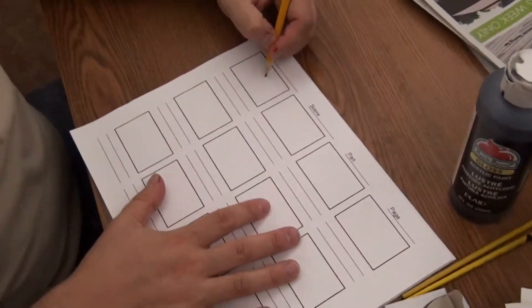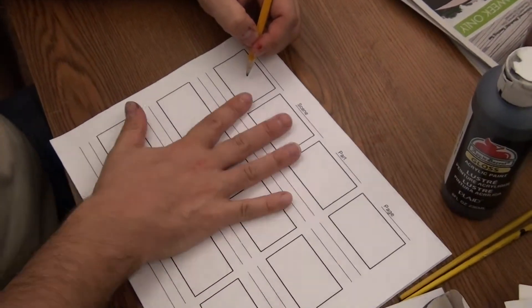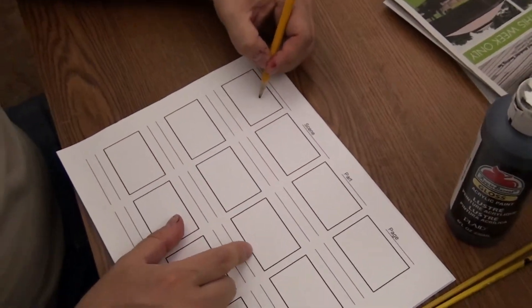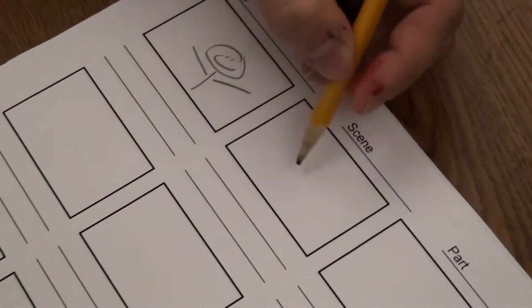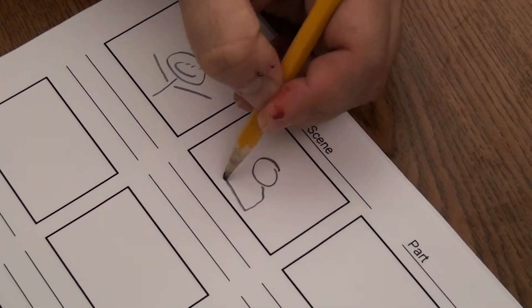You can draw in super crazy ways. The storyboards are your rules. If you want to draw a stick figure, draw a stick figure. If you want to draw a Lego man, draw a Lego man.